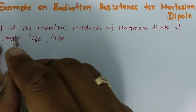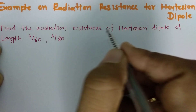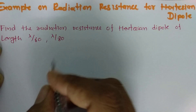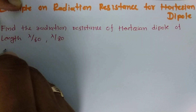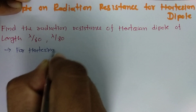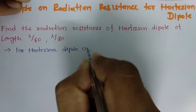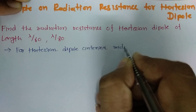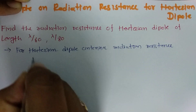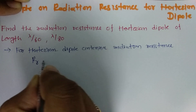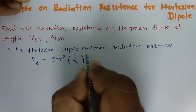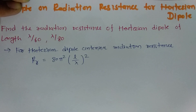The question given is: find the radiation resistance for a Hertzian dipole of length λ/60 and λ/80. As discussed in the last session, the radiation resistance formula for a Hertzian dipole is Rr = 80π²(L/λ)².